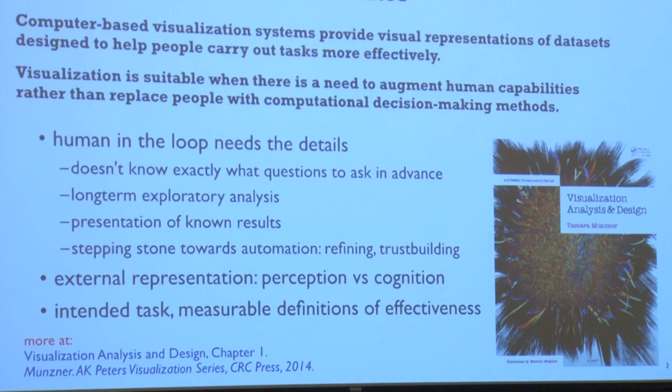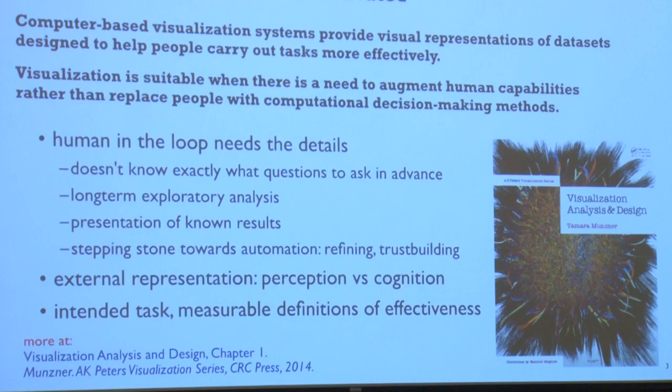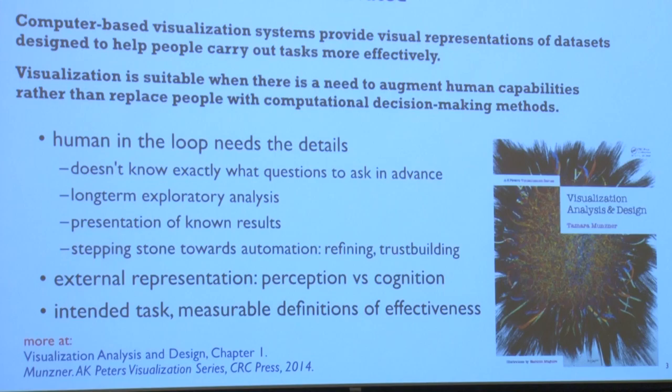VIS is suitable when there's a human in the loop who needs the details. Why would this be? It's that you don't know exactly what you want — you don't know which question to ask in advance. You could write a program if you knew you were asking question A, but what if there are a hundred or ten thousand possible questions? That's where you often want a lot of exploratory analysis. The classic use case is exploratory data analysis for science — you want to cure cancer, you don't just program that in.